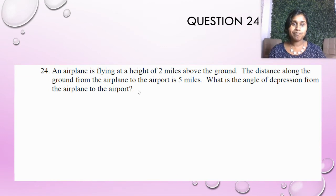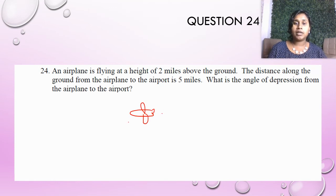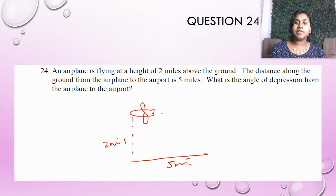Last question. An airplane is flying at a height of two miles above the ground. The distance along the ground from the airplane to the airport is five miles. So you've got a little airplane flying along. He's two miles above the ground. The distance along the ground from the airplane to the airport. So this distance right here is five miles.